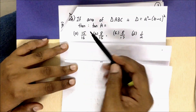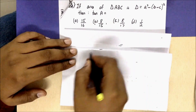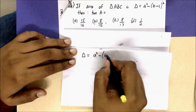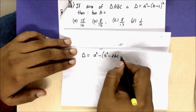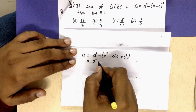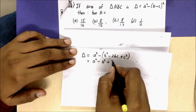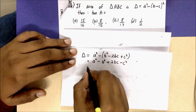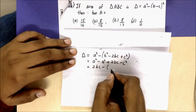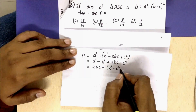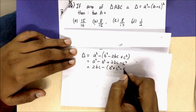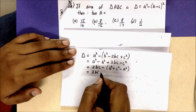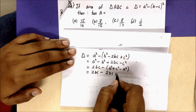The third question gives the area of a triangle as some expression, and we need to find tan A. Let us expand the expression: the area squared equals (a − (b − c))² expanded gives a² − b² + 2bc − c². Combining b², c², and a² terms, we get 2bc minus (b² + c² − a²).